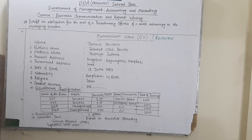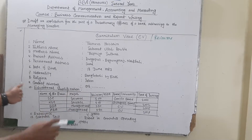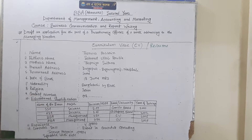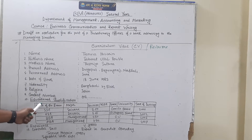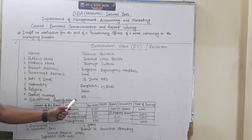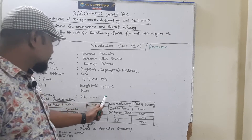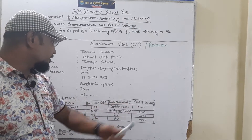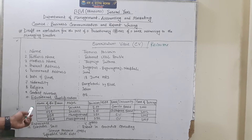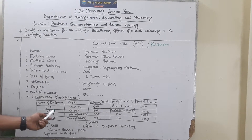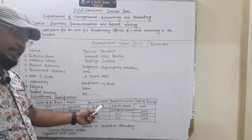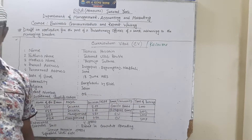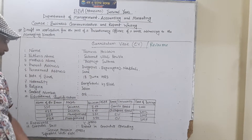Number 10: educational qualification. In this section you have to write a table with columns and rows. First column: name of exam. Second: major. Third: division or CGPA. Fourth column: board or university. Fifth: year of passing. First row — SSC, Science, Board: result GPA 5, Comilla Board, year of passing 2002.